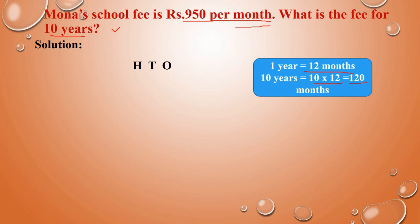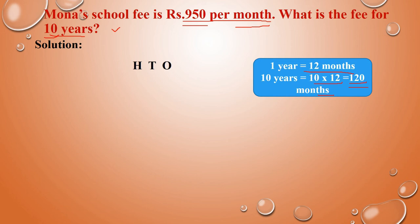They are asking for 10 years — so how many months are there in 10 years? 1 year is 12 months, so 10 years: 10 into 12 is 120 months. So now you have to multiply: 950 into 120. You should not multiply with the original 10, because we have already converted 10 years into 120 months.